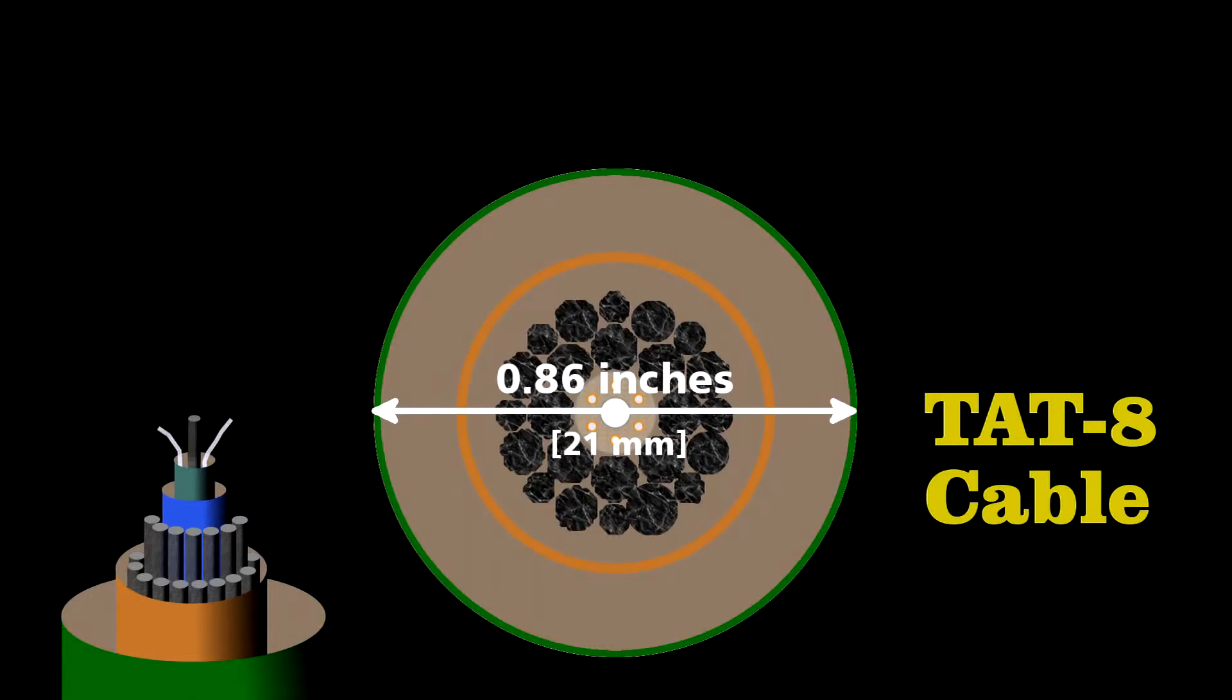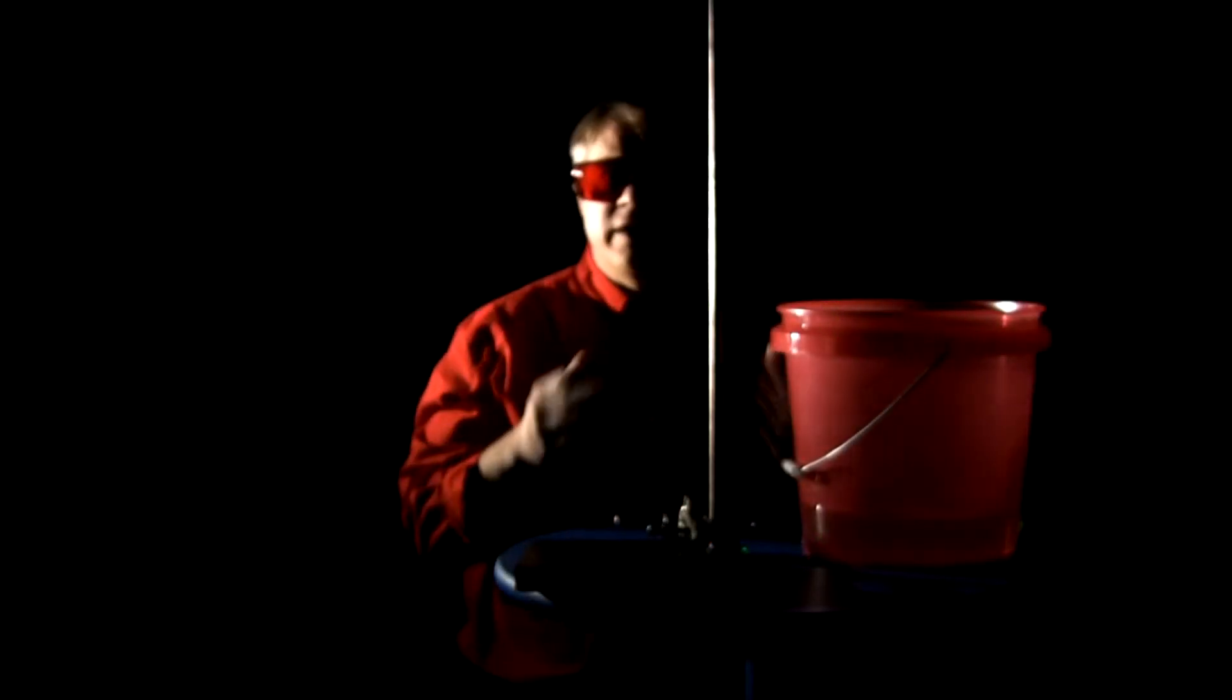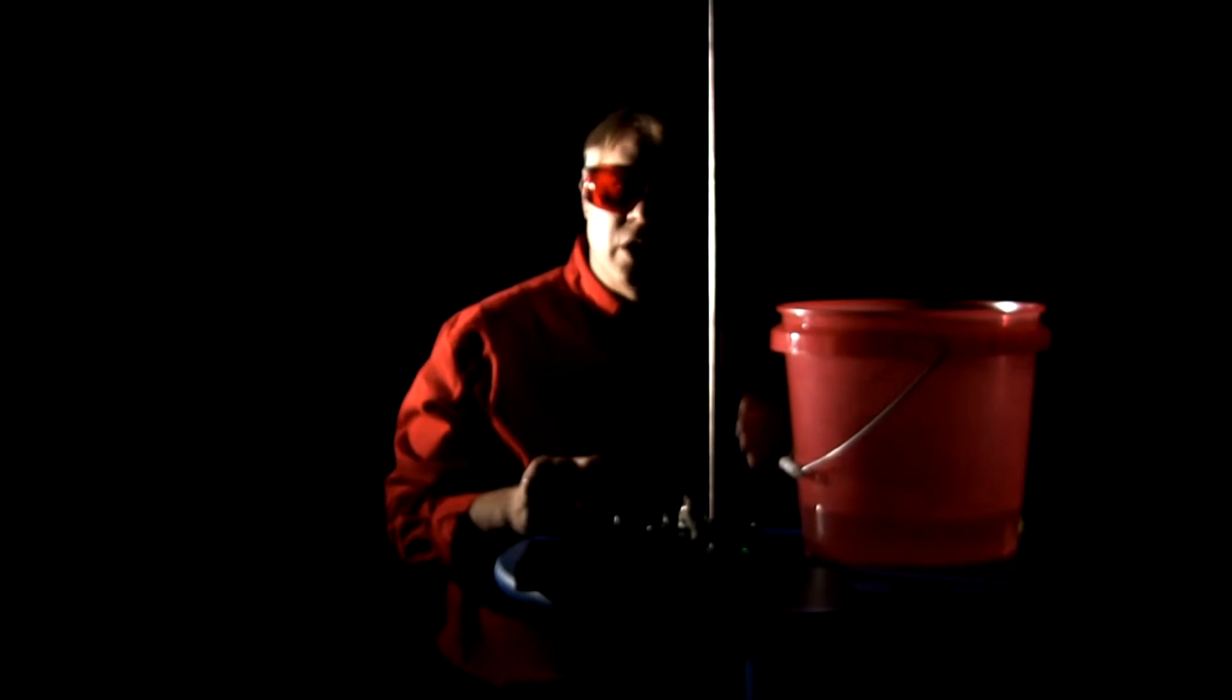The essence of how they send information through a fiber optic cable is very simple. I could have a prearranged signal with someone at the other end. Perhaps we'll use Morse code, and I just block the laser so that the person at that end sees flashes that communicate a message.